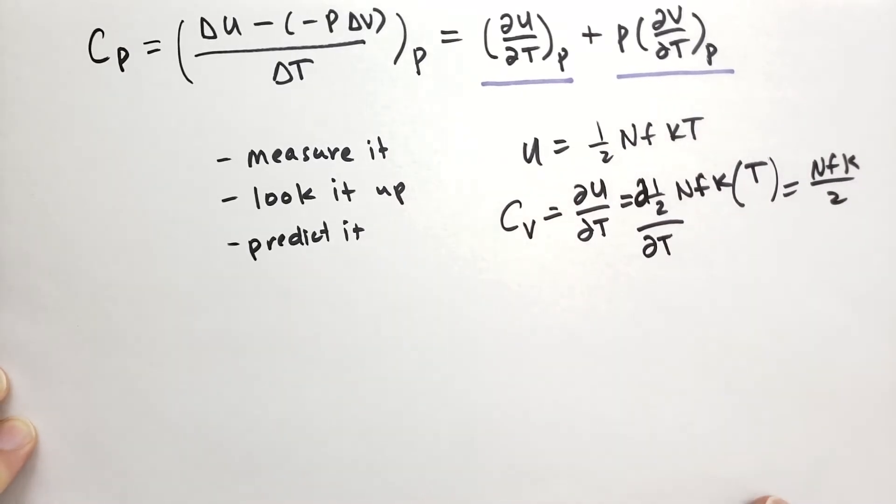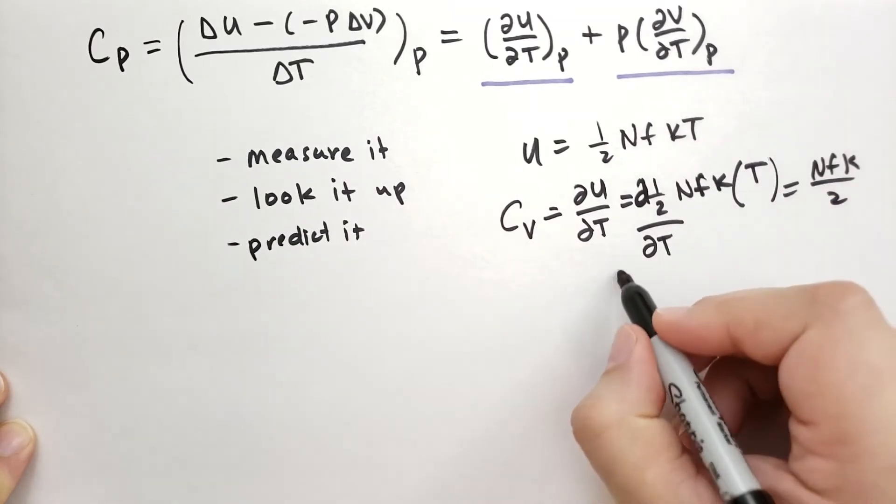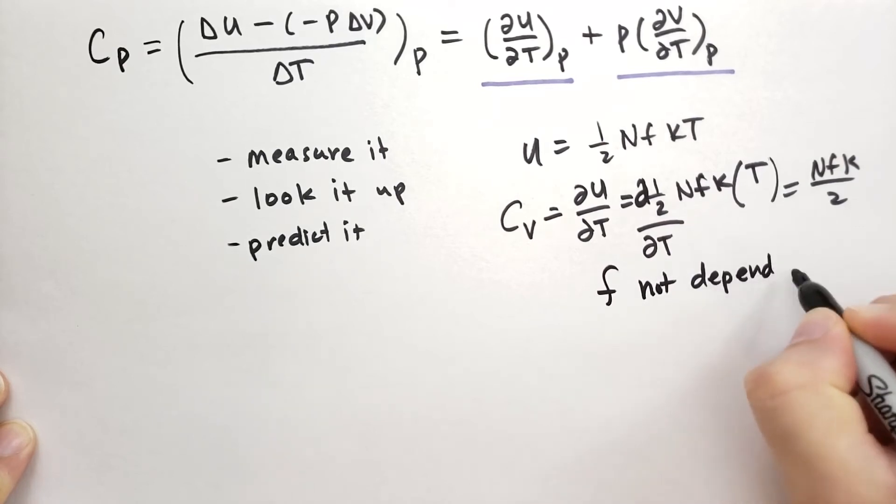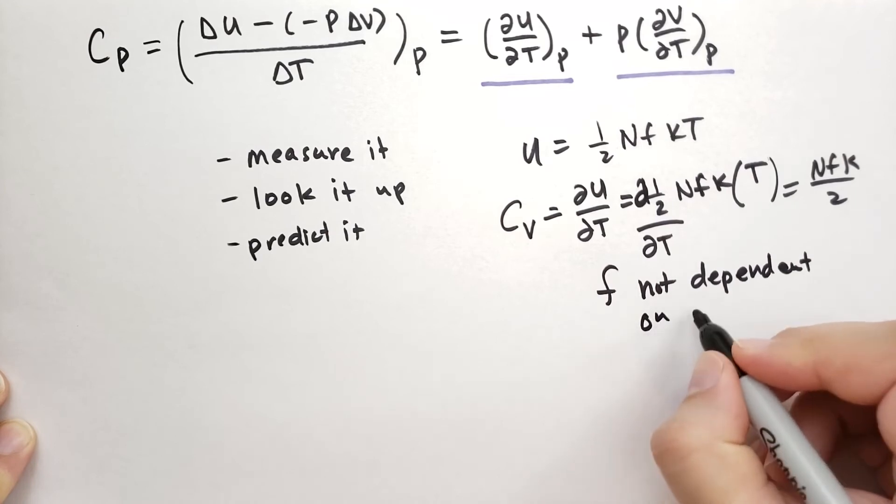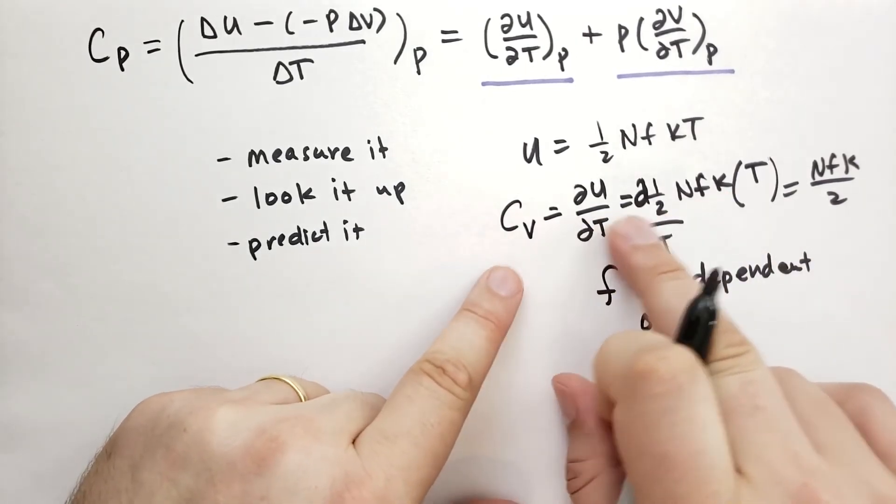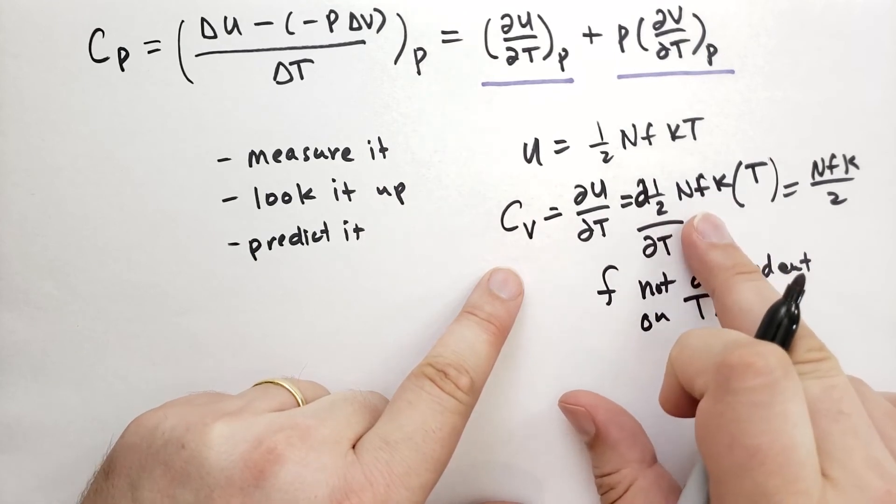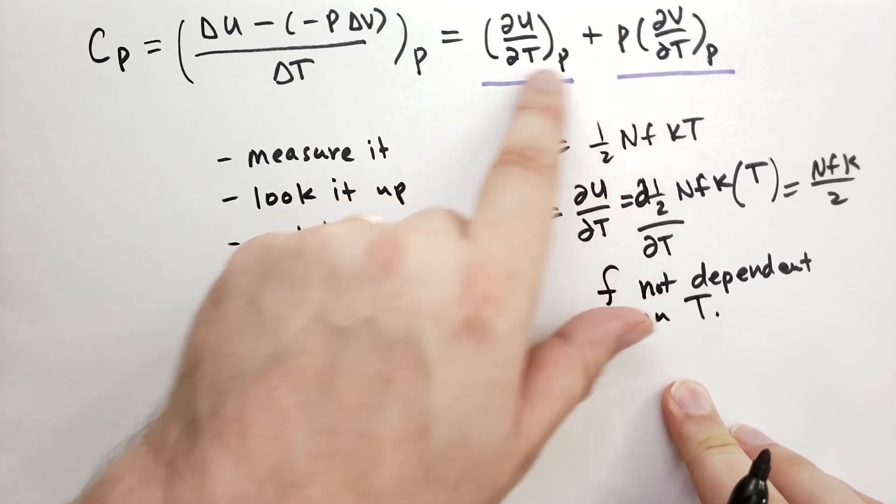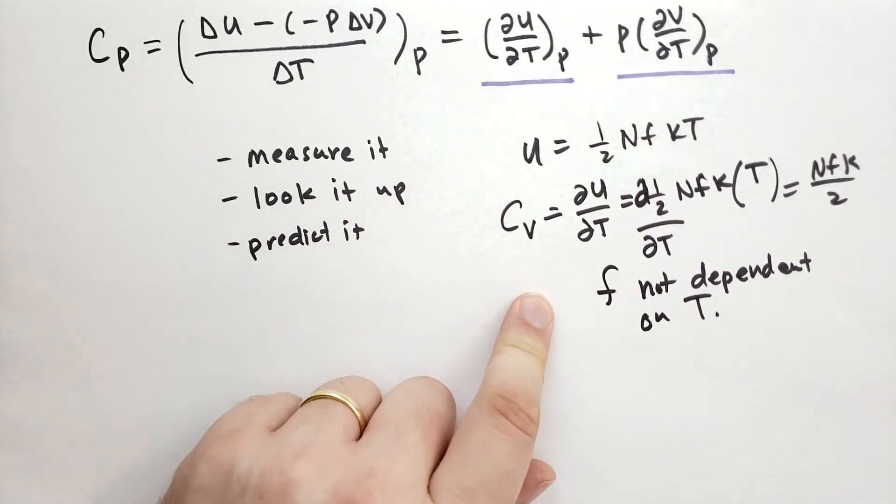This, of course, relies on f not depending on temperature. In practice, you'll see that depending on the temperature range you're at, f will quite depend on the temperature. So you'll unlock degrees of freedom as the temperature rises. For this particular case, notice that the internal energy doesn't depend on the volume or the pressure. And so this is the same as this guy up here. So it'll give you the same answer for cv or cp.